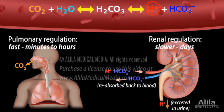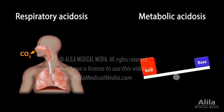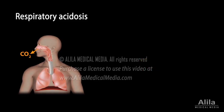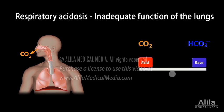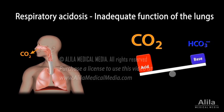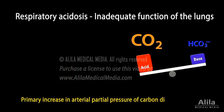There are two major types of acidosis: respiratory and metabolic. Respiratory acidosis results from inadequate function of the lungs. As carbon dioxide is not exhaled fast enough, it accumulates in the blood, raising acidity. Respiratory acidosis is characterized by a primary increase in arterial partial pressure of carbon dioxide.